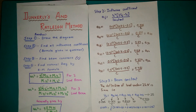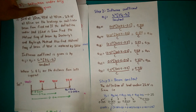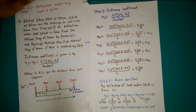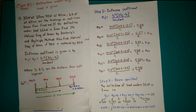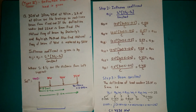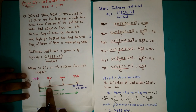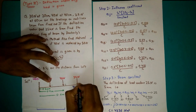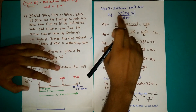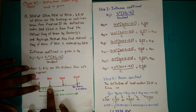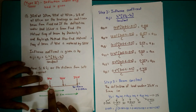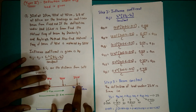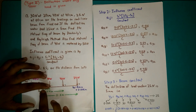Step 2: find the influence coefficient using the formula given in the question. A_ij = S_i squared times (3*S_j minus S_i) divided by the constant C. For A11: S_i = 0.2 and S_j = 0.2 (distance from the left). For A12: S_i = 0.2 and S_j = 0.4. For A13: S_i = 0.2 and S_j = 0.6. S_i is the distance of the load from the left-hand end.